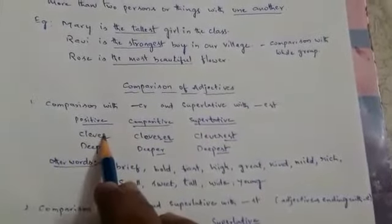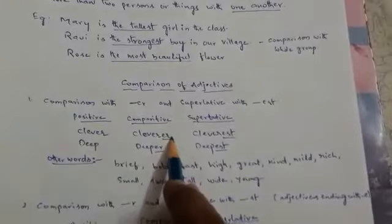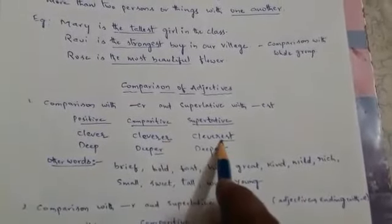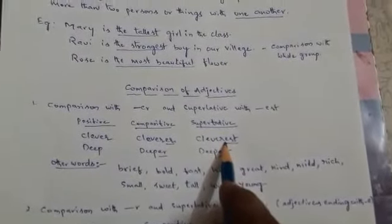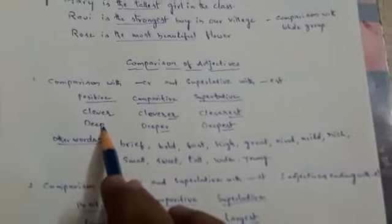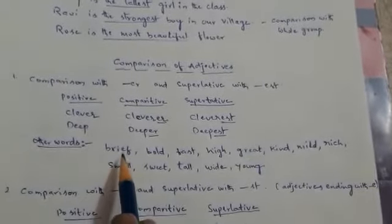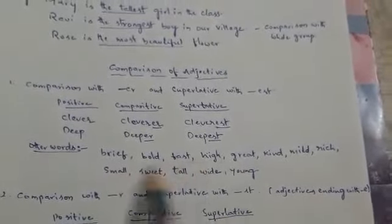So, clever is the positive, cleverer is the comparative, cleverest is the superlative. Similarly, deep, deeper, deepest. So, you may form similarly with all these adjectives.